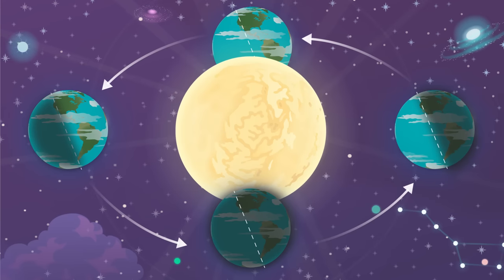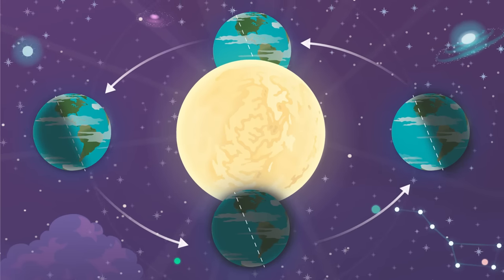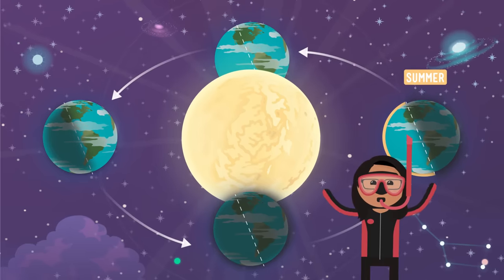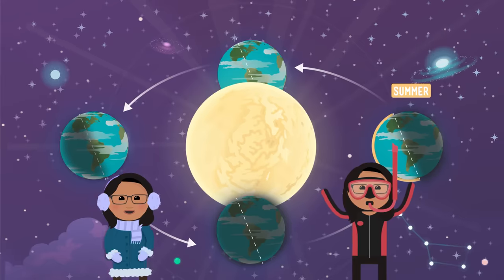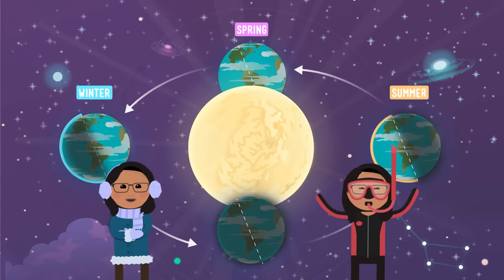When the part of the world that you're living in is leaning towards the sun, it's warm and the days are long. Summer. When you're on the part that's leaning away from the sun, it's cold and the days are short. Winter. In between, it's spring or autumn. If the Earth weren't tilted, we would have the same season all year long.